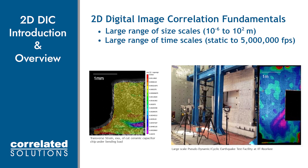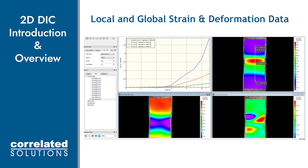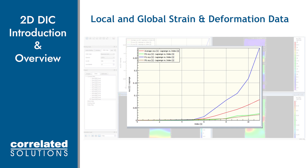Here is an example of 2D DIC and the full field strain data that is obtained in VIC-2D. In the line extraction to the upper left, we can extract global data as well as local data. These local areas and points are user defined and drawn here in the plot to the upper right.